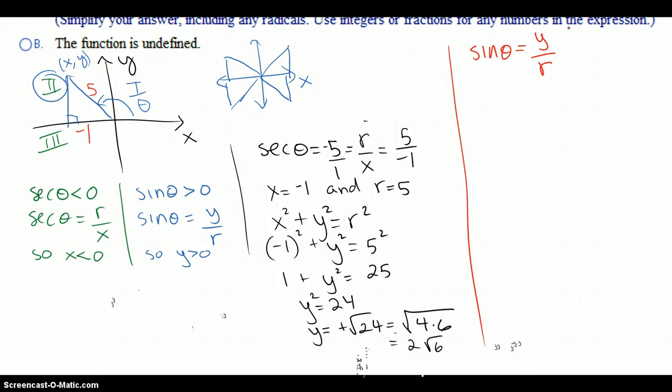What is the y? We just found it to be 2 square root of 6 over the r, which we know is 5. So we should have wrote this down here. 2 square root of 6 is what the y is.